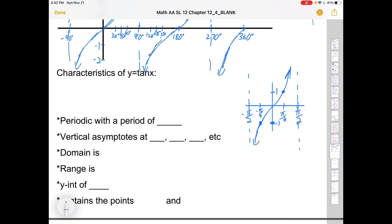Characteristics of y equals tan x: It's periodic with a period of 180 or π radians. It has vertical asymptotes at negative π over 2, at π over 2, at 270 degrees, so that's 3π over 2, and it'll just repeat every π units.